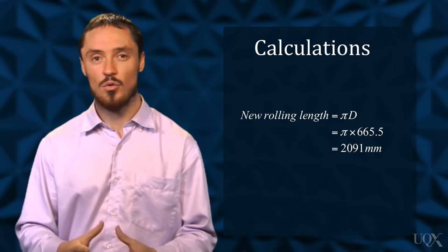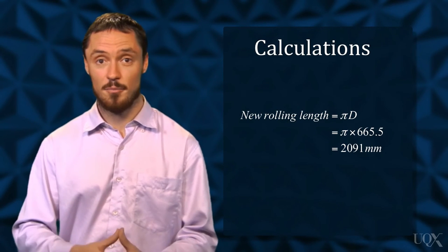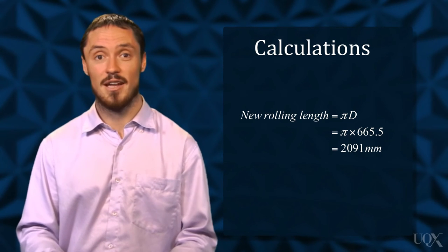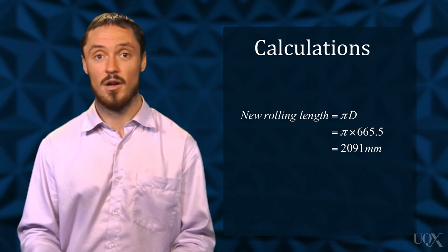This means the total length of one revolution would be a new rolling length of pi d, giving pi times 665.5, which is 2,091 millimetres.